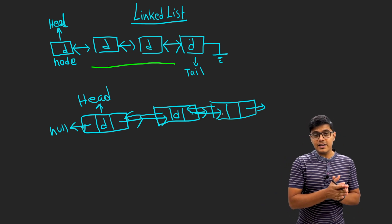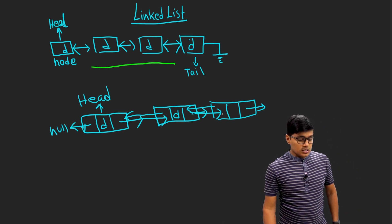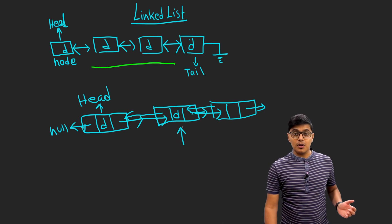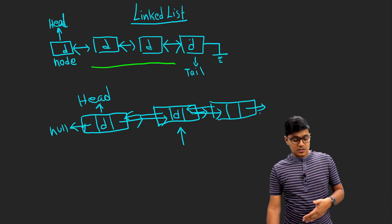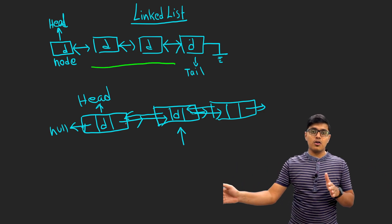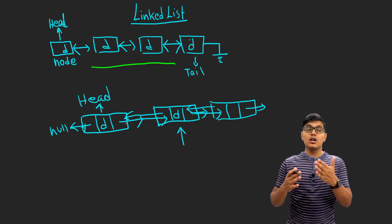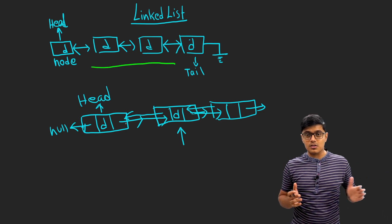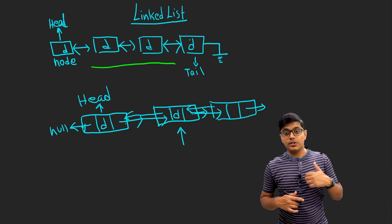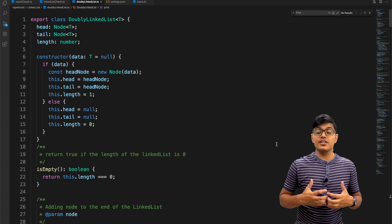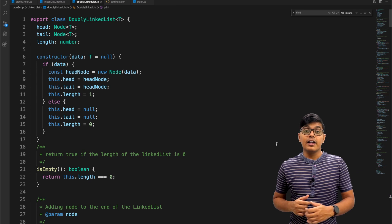The benefit of a double linked list is that if you have a pointer at any node, you can go forward or backward — you just traverse in either direction. In a single linked list, once you pass a node you don't have the previous reference, so you can't go backward. That's the main benefit of a double linked list.